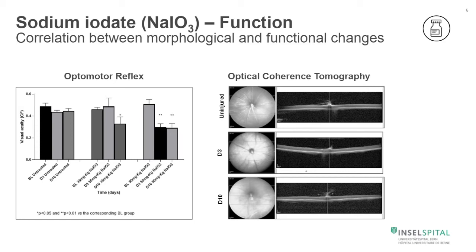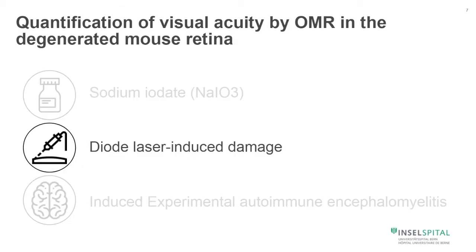When you look at the retinal thickness in the optical coherence tomography, you see over time a thinning of the retina. This gives you an idea about the correlation between morphological changes and functional changes.